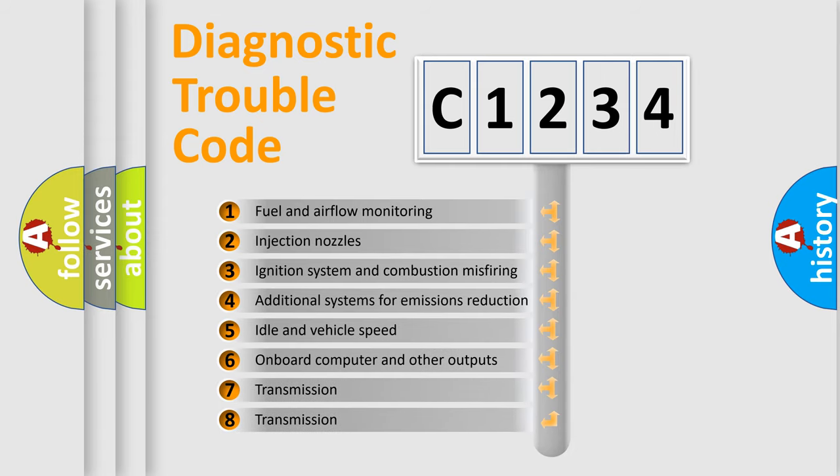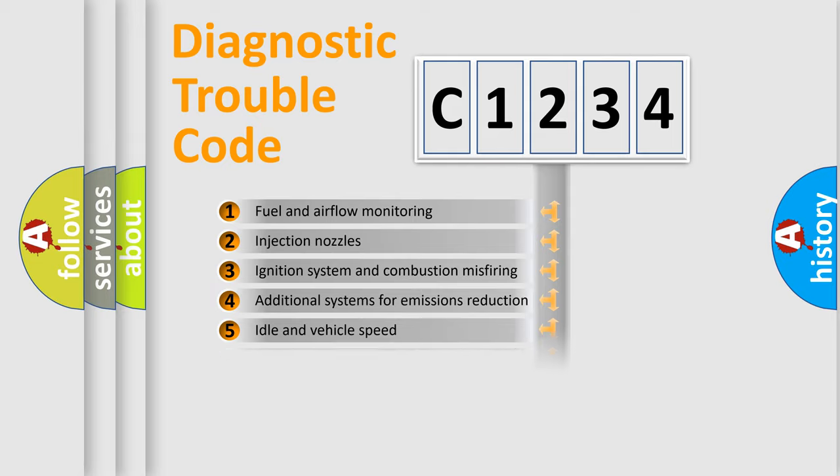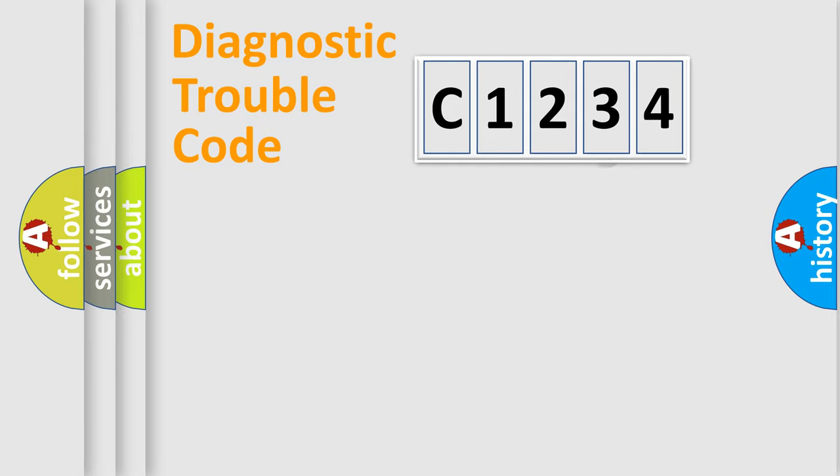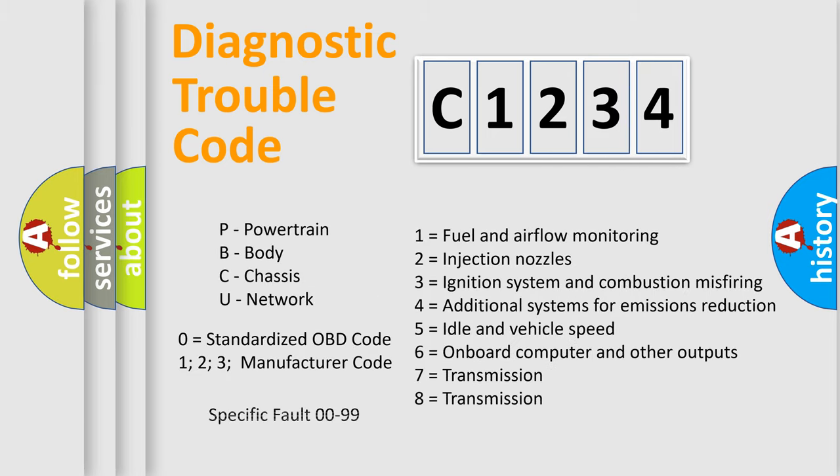The third character specifies a subset of errors. The distribution shown is valid only for the standardized DTC code. Only the last two characters define the specific fault of the group. Let's not forget that such a division is valid only if the other character code is expressed by the number zero.